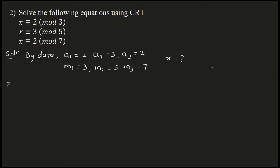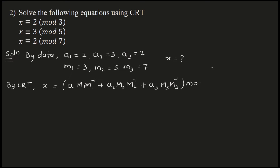By Chinese Remainder Theorem, x is equal to a1·M1·M1_inverse plus a2·M2·M2_inverse plus a3·M3·M3_inverse mod M. Since we have three equations, we need to write three expressions. This is the CRT solution expression.